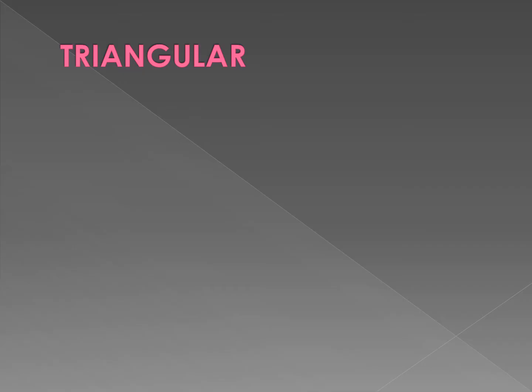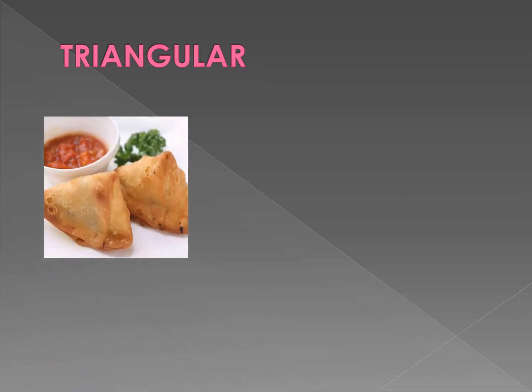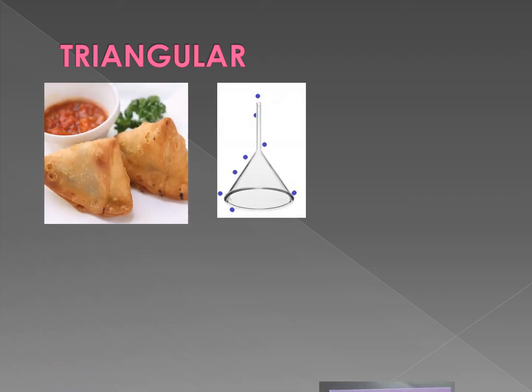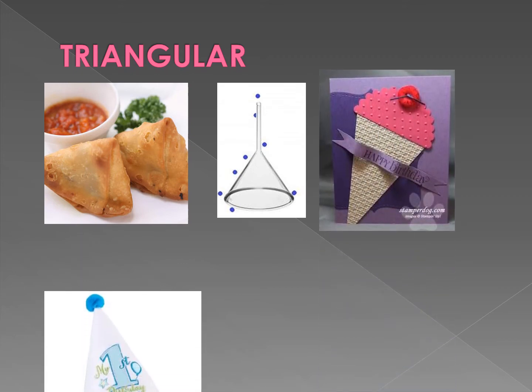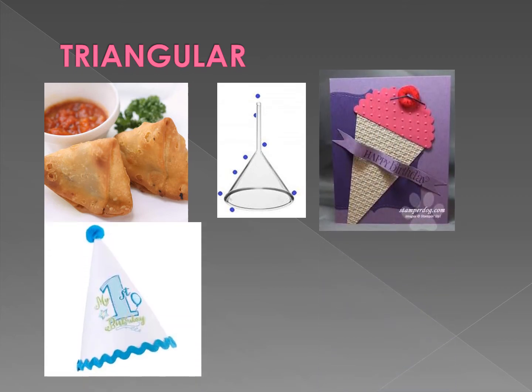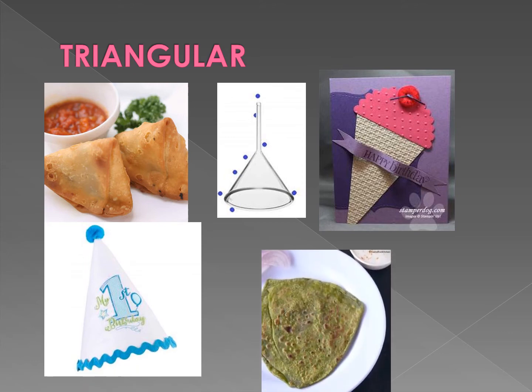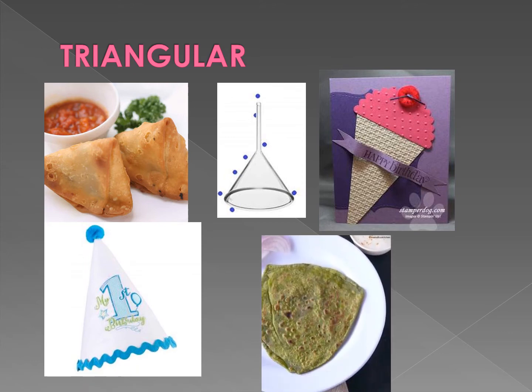The next shape is triangular shape, which has three sides and three corners — a three closed side shape. See the examples: Samosa, Funeral, Ice Cream Cone, Purje Cap and Paranatha. You can see, these are triangular shapes.